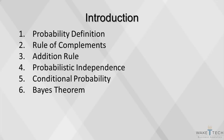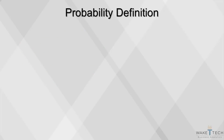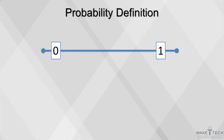In this video, we will first define probability, then cover the rule of complements, the addition rule, probabilistic independence, conditional probability, and the Bayes theorem. A probability is a number between 0 and 1 that measures the likelihood that some event will occur for a random variable.